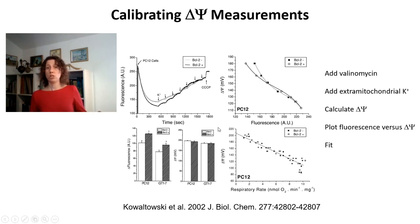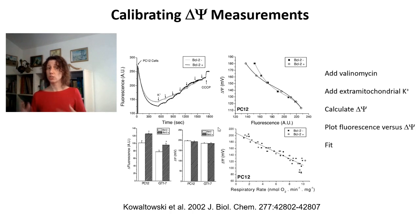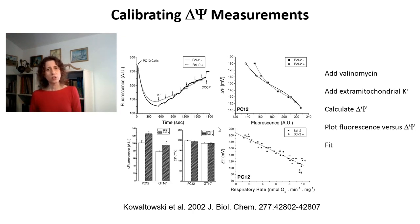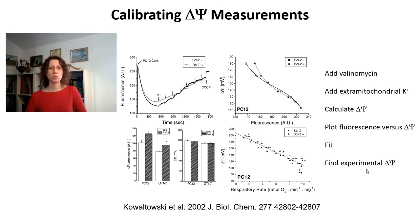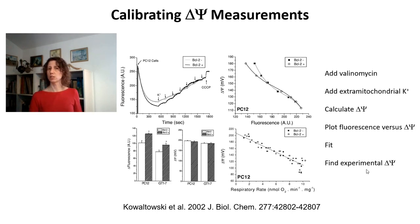Either calibrate your mitochondrial membrane potential measurements — especially in isolated mitochondria or permeabilized cell conditions where calibration is easily done — or simply measure oxygen consumption, which is quantitative and not affected by changes in mitochondrial size and shape. You can extrapolate your calibration curve to determine the actual membrane potential in millivolts from your experimental fluorescence. That's what I wanted to tell you about measuring oxidative phosphorylation in isolated systems. This is the end of class two. We'll be back next week with class three, in which we will measure ion transport in mitochondria.